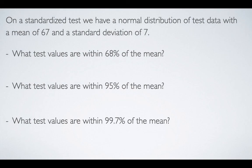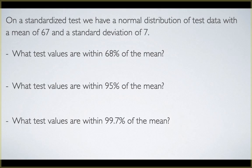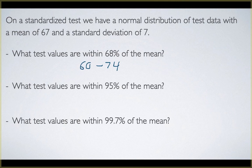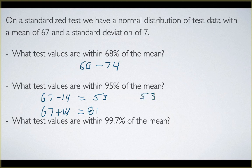On a standardized test with a normal distribution, mean of 67 and standard deviation of 7: what test values are within 68% of the mean? 68% corresponds to one standard deviation, so we take 67 minus 7 and 67 plus 7, giving a range of 60 to 74. What test values are within 95% of the mean? 95% is two standard deviations, so we add and subtract 14 from 67: 67 minus 14 is 53, and 67 plus 14 is 81. So the range is 53 to 81.